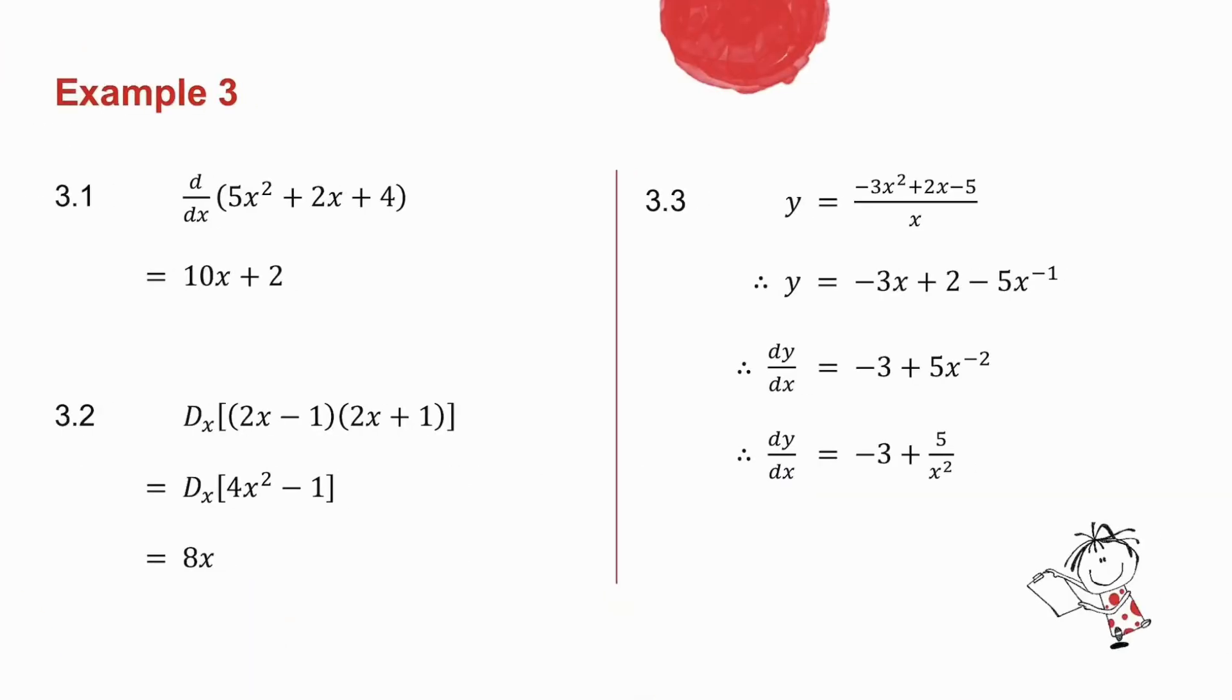In 3.1, it simply says find the derivative of 5x squared plus 2x plus 4. So all I do is 2 times 5 is 10, x to the 1. Derivative of plus 2x is 2.